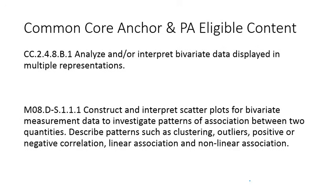That is the lesson on scatter plots. We should be able to construct a scatter plot given some data, and interpret it. That bivariate word just means there are two pieces of information we're comparing — time versus money in your wallet, or amount of miles driven. Here are your Common Core anchor and Pennsylvania-eligible content. I hope that lesson was helpful. Have a wonderful day.